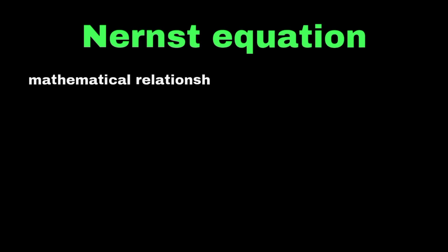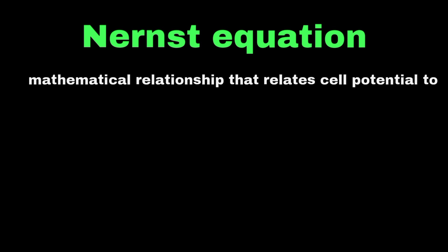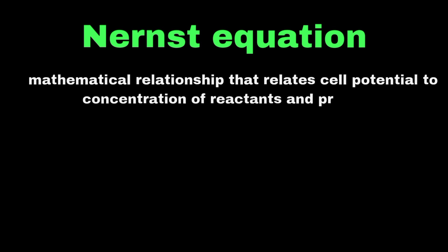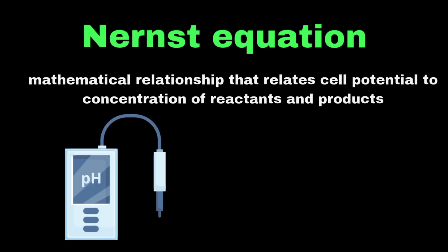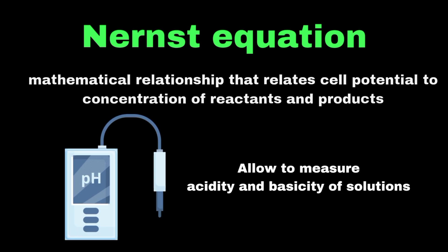Let's explain the Nernst equation, which can be defined as a mathematical relationship that relates cell potential to the concentration of reactants and products. To understand this deeply, let's look at pH meters. A pH meter uses the Nernst equation to convert the potential difference between its electrodes into a pH reading, allowing us to measure the acidity or basicity of solutions.